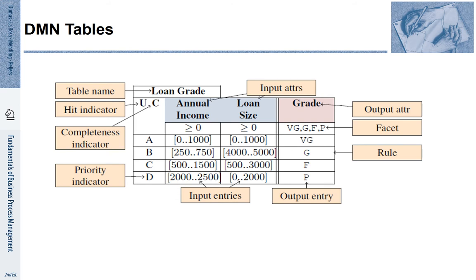Input attributes are shown as different columns — here columns with a blue color. There is annual income and loan size that are relevant for the grade. There are also output attributes — here it is a single output attribute that is called 'grade'. The facet is the range that these grades can take.